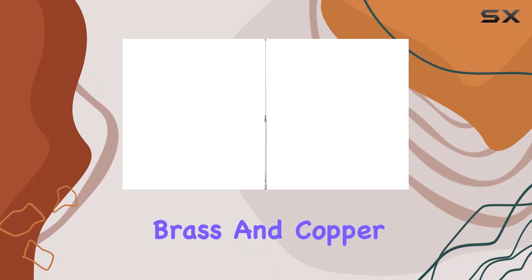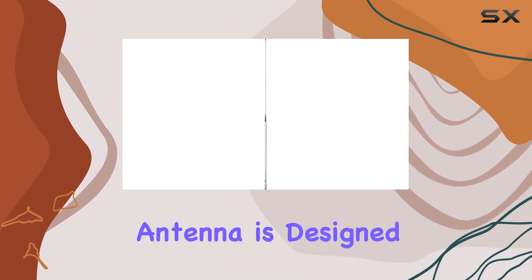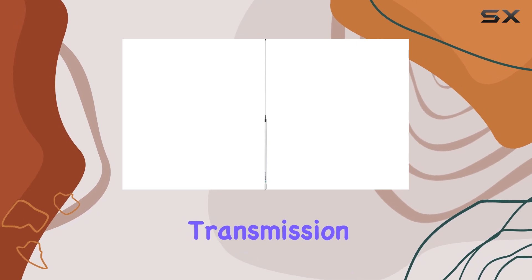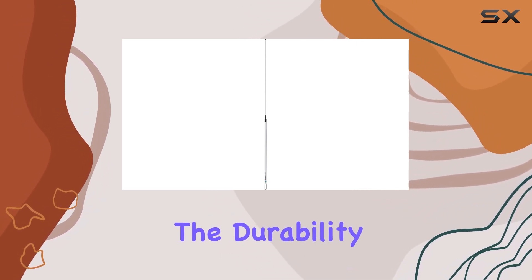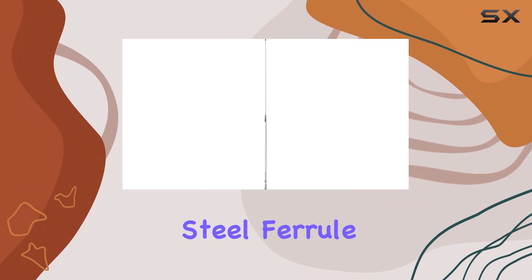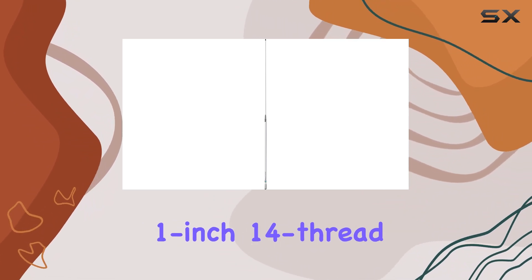Constructed from high-quality brass and copper elements, this antenna is designed not only for optimal signal transmission but also for enduring harsh marine environments. The durability is further enhanced by the stainless steel ferrule with a standard 1-inch 14-thread mount.